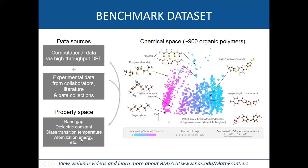In recent years, we've focused on properties such as band gap, dielectric constant, and glass transition temperature. The colorful picture shown is a two-dimensional scaled representation of the variety of polymers accumulated in our database — about 900 shown here, though the slide is outdated; we now have several thousand polymers with a number of different properties.